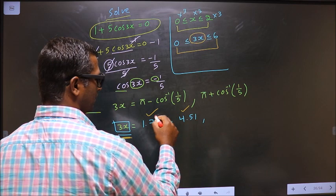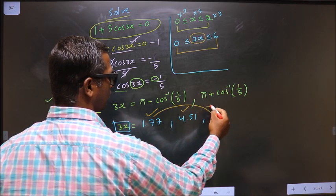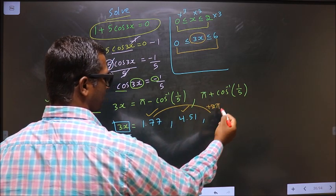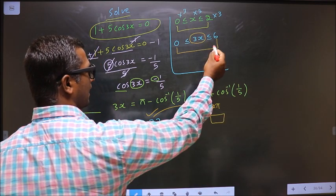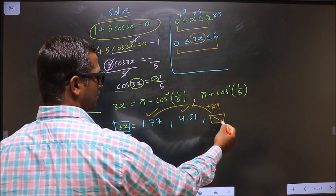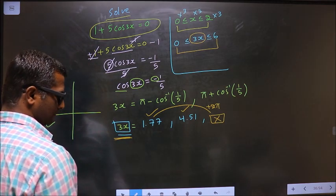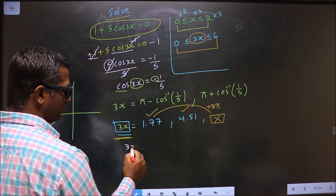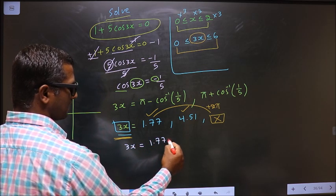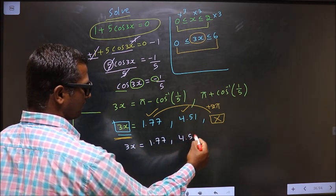Now to get another value, we should add 2π to this. When we add 2π I get a value. This does not lie in this interval, so I reject it. So the values we got for 3x are 1.77 and 4.51.